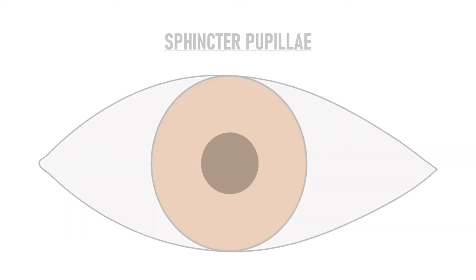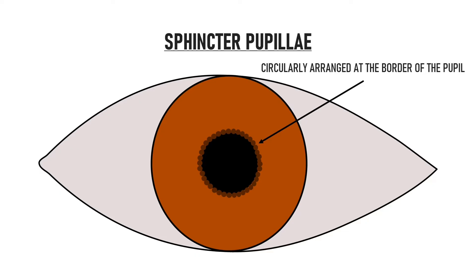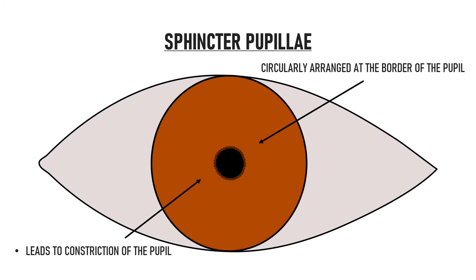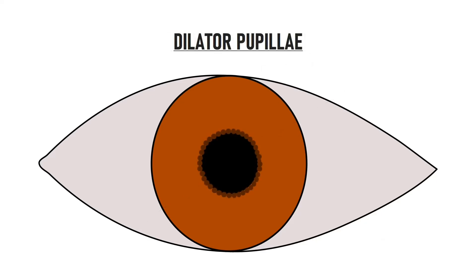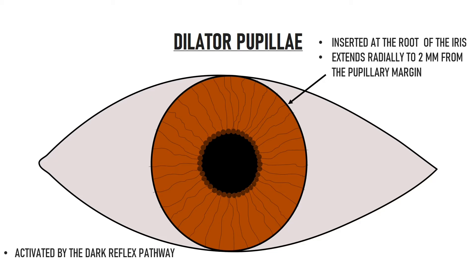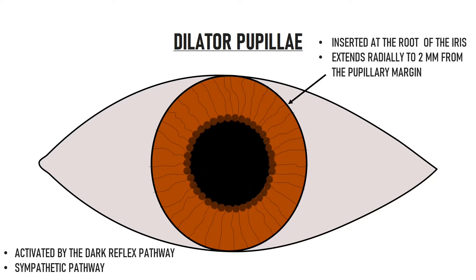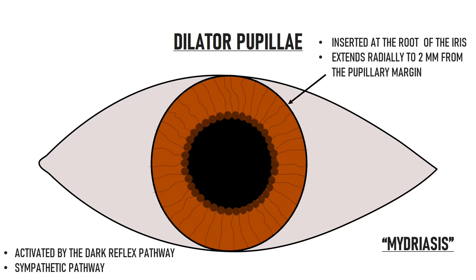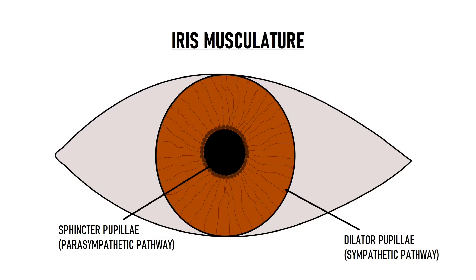The stroma of the iris has two muscles: the sphincter pupillae and the dilator pupillae. The sphincter pupillae muscle is circularly arranged at the border of the pupil. When the sphincter pupillae muscle contracts, it leads to constriction of the pupil via the parasympathetic pathway — this is known as miosis. The dilator pupillae muscle is inserted at the root of the iris and extends radially to about 2 mm from the margin of the pupil. The dilator pupillae gets activated by the dark reflex pathway, which is a sympathetic pathway, and this results in dilatation of the pupil, known as mydriasis. The diameter of the pupil is the result of the balance between these two antagonistic muscles.